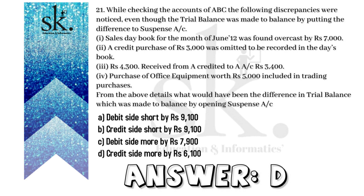After taking the second transaction into consideration, the credit side of the trial balance is still rupees 7,000 more. Number three: rupees 4,300 received from a debtor was credited to the account as rupees 3,400 — undercast by rupees 900. Therefore on the debit side we require to add 900, making the credit side overcast by rupees 6,100, which is 7,000 minus 900.